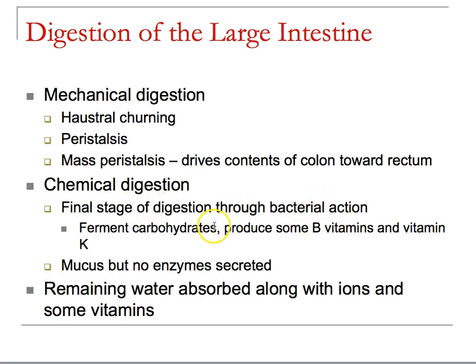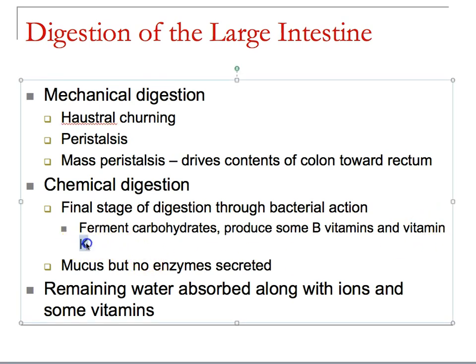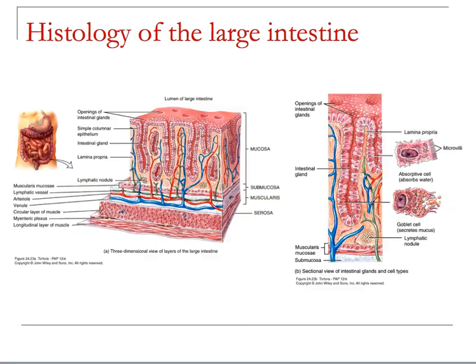Bacteria ferment carbohydrates — think about poorly-soaked beans — and produce B vitamins and vitamin K. B12 is in this group as well, and without it we don't have functioning red blood cells. The large intestine itself secretes no enzymes; it's just mucus. Everything the bacteria need is provided. Absorptive cells on the lamina propria absorb water, goblet cells secrete mucus, and materials pass along the surface.